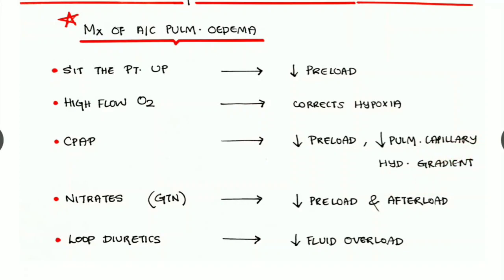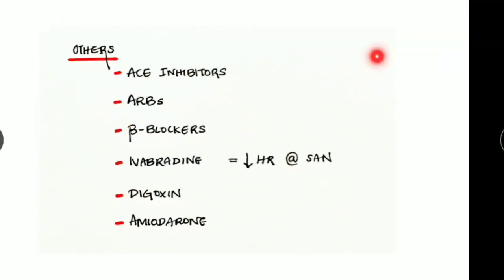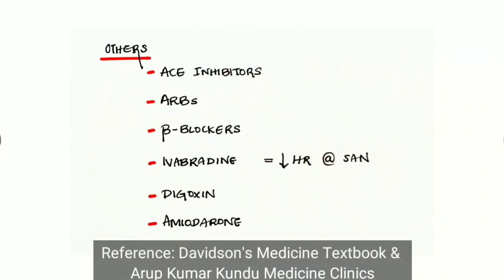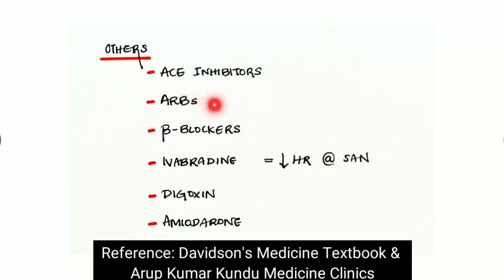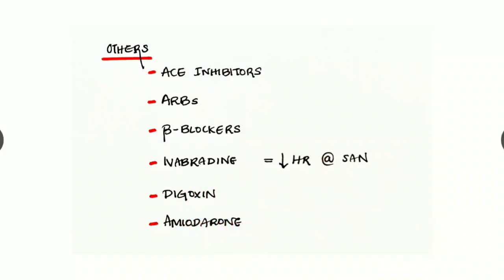Give CPAP — continuous positive airway pressure — which reduces preload and reduces the pulmonary capillary hydraulic gradient. Give nitrates such as IV glyceryl trinitrate to reduce preload and afterload. Give loop diuretics to reduce fluid overload. Additional medications include ACE inhibitors, angiotensin receptor blockers, beta blockers, ivabradine — which reduces heart rate by acting at the SA node — digoxin, and amiodarone as an anti-arrhythmic drug.